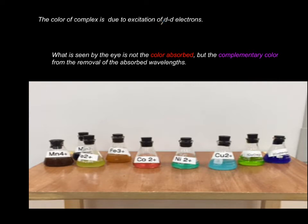It is the transition between d and d orbital electrons. Some of the white light is absorbed, and that's not the color you see. The complementary or leftover of the white light is the color that is being reflected.